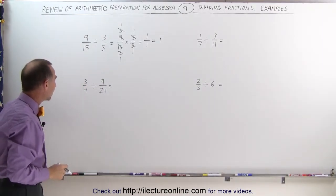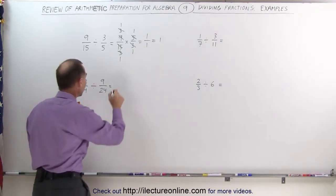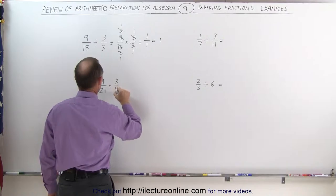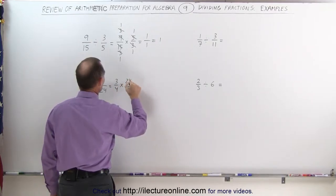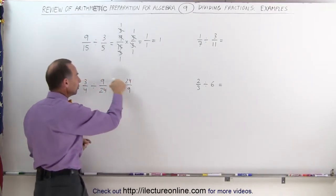Let's try this one here. Again, dividing by a fraction is the same as multiplying by its inverse: 3/4 multiplied times 24/9. Before you multiply the numerators together and the denominators together, you want to simplify as much as you can.